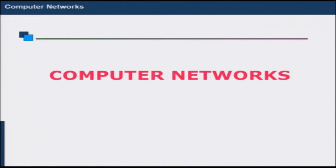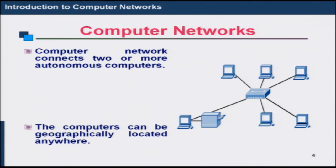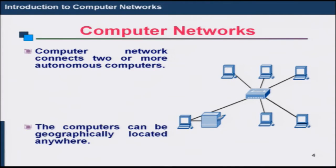Starting with part one — the computer network introduction. The classical definition of a computer network is: if you can interconnect two or more autonomous computers such that they can communicate and share resources, it is called a computer network. The geographical spread could be anything — computers in one room, one building, one campus, a city, or across multiple cities or the whole globe. If multiple computers are interconnected so they can communicate and share resources, it is a computer network.